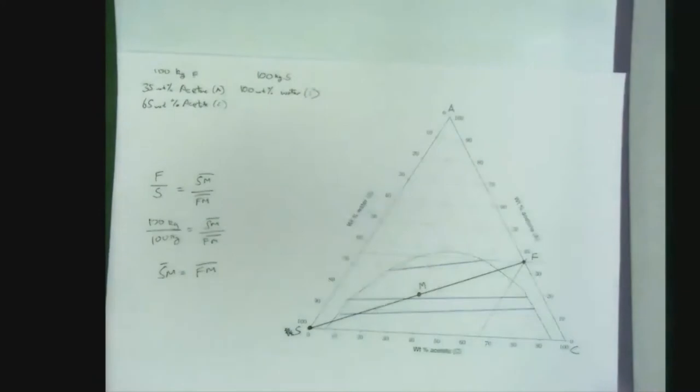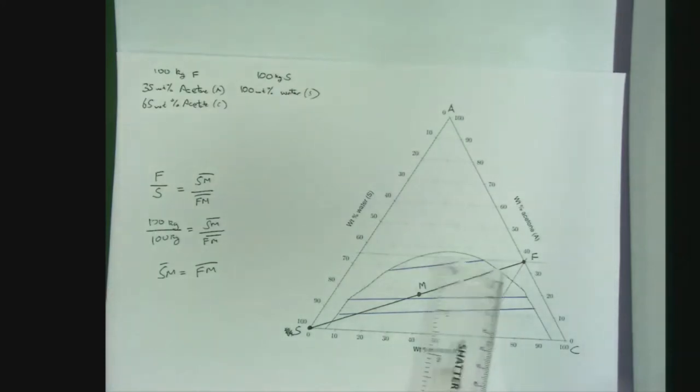In this case, we were only given those three tie lines. I've just highlighted them in blue so you can actually see them. You can see that our mixing point doesn't actually lie on one of these tie lines - it lies in between the middle tie line and the top tie line.